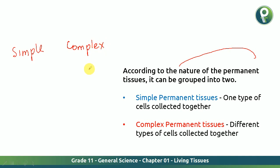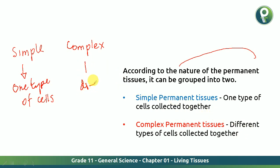Simple and complex. In the simple one, one type of cells is collected together — just one type of cells. In the complex permanent tissue, there are different types of cells. So the major difference is: simple has one type of cells, and complex has different types of cells.